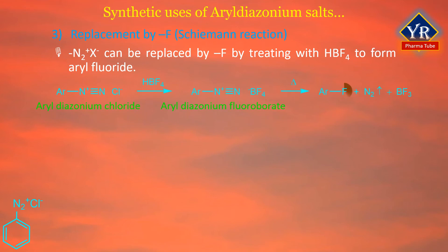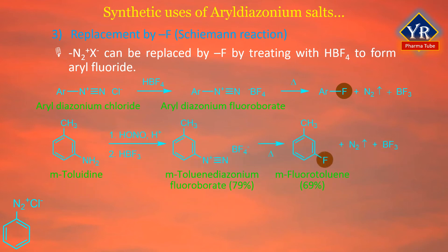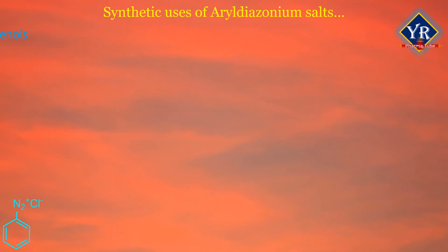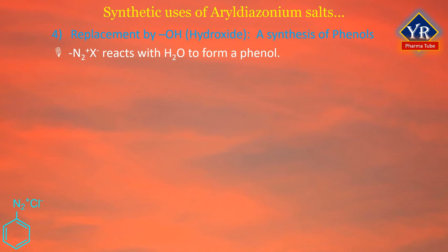Replacement by fluorine: the diazonium group can be replaced by fluorine by treating the diazonium salt with fluoroboric acid to form aryl fluoride. This reaction is also known as the Schiemann reaction. The diazonium fluoroborate that precipitates is isolated, dried, and heated until decomposition occurs to give aryl fluoride. This is useful because aryl fluorides cannot be produced by direct fluorination, as fluorine reacts too violently.